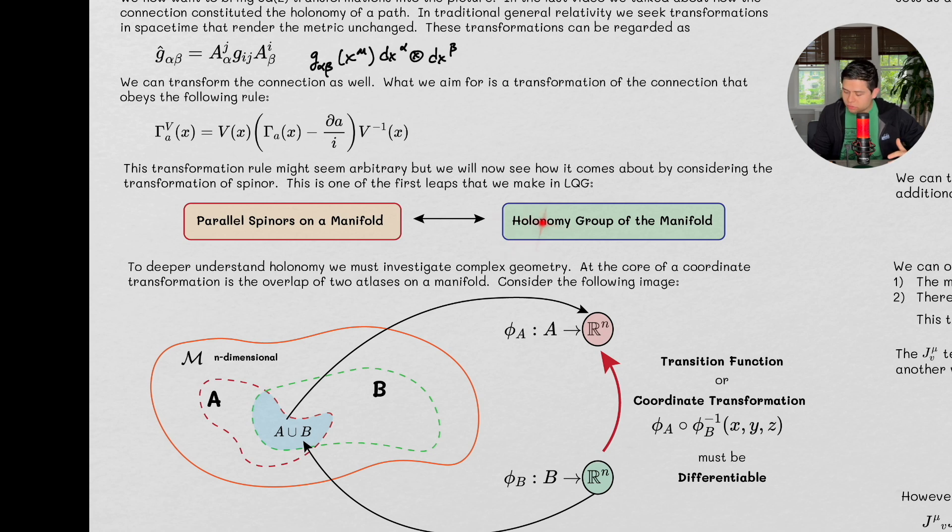We're saying that parallel spinors on a manifold are somehow analogous to the holonomy of the manifold. What is the holonomy? Well, it is related to transition functions on a manifold. It is related to the topological features of a manifold, and so we really need to start thinking about topological features, we really need to start thinking about how manifolds become complex, again, because spinors are complex values, and so this is going to be the content of our discussion for the next three to four videos.